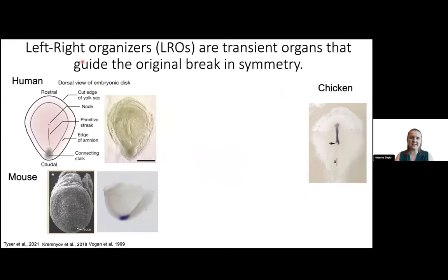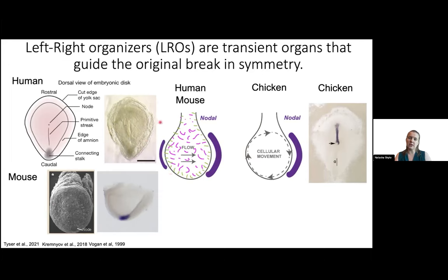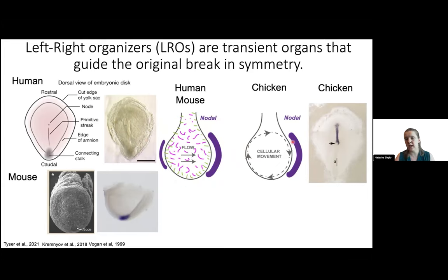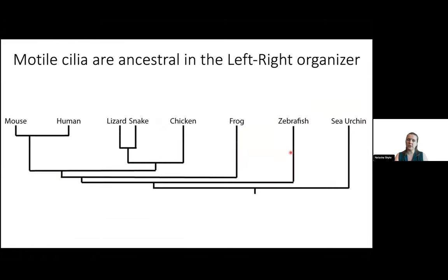There's an interesting difference between left-right organizers across species. Mice and humans have motile cilia in their left-right organizer that create leftward flow, and as a result of this leftward flow, we get asymmetric expression of genes like nodal on the left and right sides of the embryo. Chickens accomplish similar things differently — they don't have motile cilia but instead use cellular movements. Having motile cilia in your left-right organizer is actually the ancestral state, shared by frogs, zebrafish, and sea urchins.